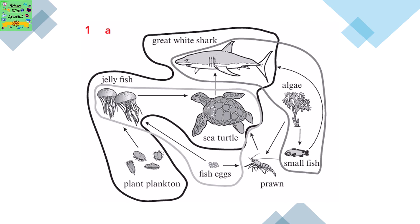In this question, you have to circle the food chains within this food web. There are three food chains, so you need to make three circles. One of the circles would be: fish eggs eaten by jellyfish, and jellyfish eaten by sea turtle.